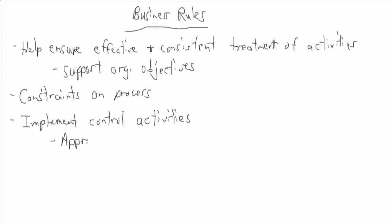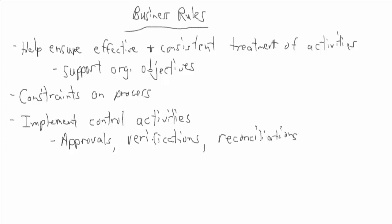Business rules are ways that we can implement controls and control activities on our process. We talked a little bit about approvals, verifications, even things like bank reconciliations. Those are all controls that we put in place to help double-check or to make sure that things that aren't supposed to happen don't happen.